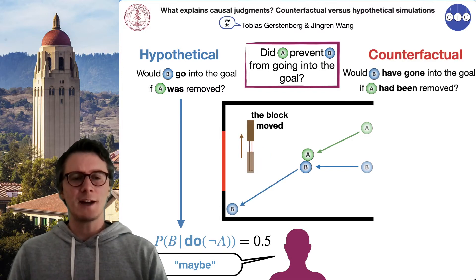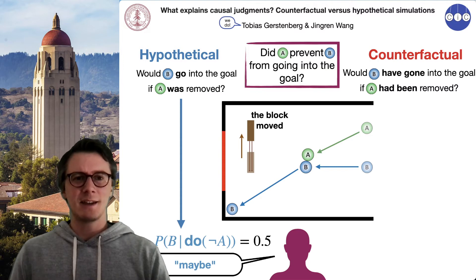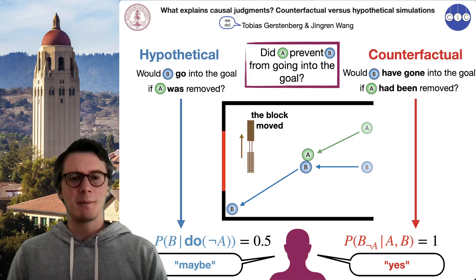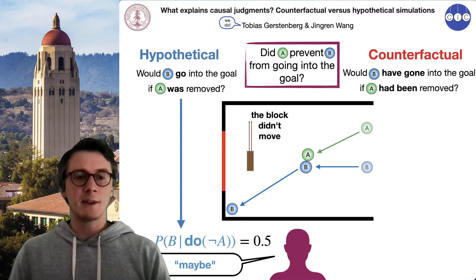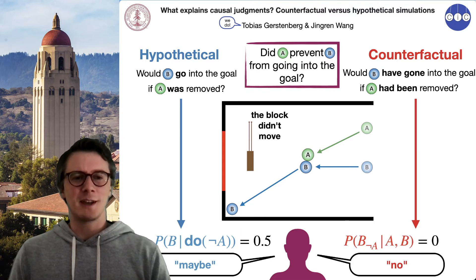For the counterfactual, if the clip played until the end and the block actually moved, according to a counterfactual, people should say that yes, A prevented ball B from going through the gate, because it would have gone in if ball A hadn't been there since the block moved out of the way. And when the block didn't move, the counterfactual prediction would be that participants should say A didn't prevent ball B from going through, because the block would have prevented it anyway.